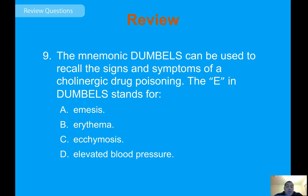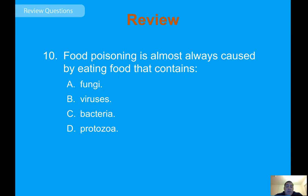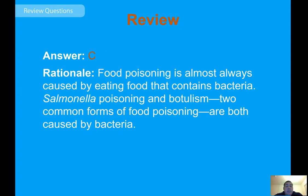Practice question: In the mnemonic DUMBBELLS, the E stands for emesis. The mnemonic helps recall the signs and symptoms of cholinergic drug poisoning such as organophosphates: Diarrhea, Urination, Miosis, Bradycardia, Bronchorrhea, Emesis, Lacrimation, and Salivation. Final question: Food poisoning is almost always caused by eating food that contains bacteria. Salmonella poisoning and botulism are two common forms of food poisoning, both caused by bacteria.